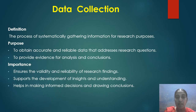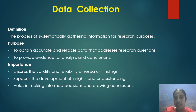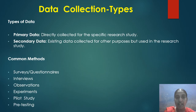Data collection is the process of systematically gathering information for research purposes, to obtain accurate and reliable data that addresses the research question and to provide evidence for analysis and conclusions. Importance: it ensures the validity and reliability of research findings, supports the development of insights, and helps in making informed decisions. Types include primary data — directly collected for the specific research study — and secondary data — existing data collected for other purposes but used in the research study. Common methods include surveys or questionnaires, interviews, observation, experiments, pilot study, and pre-testing.